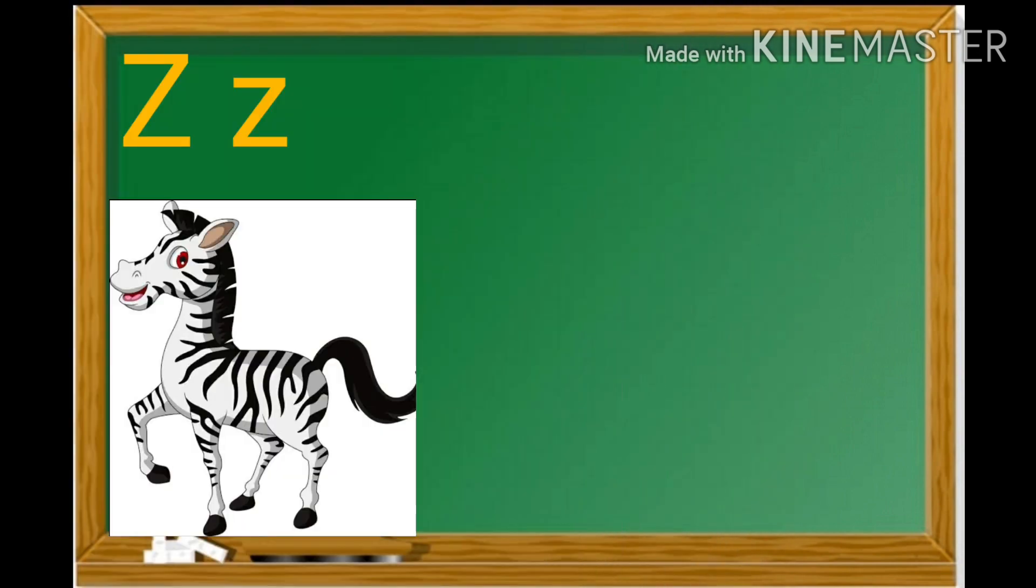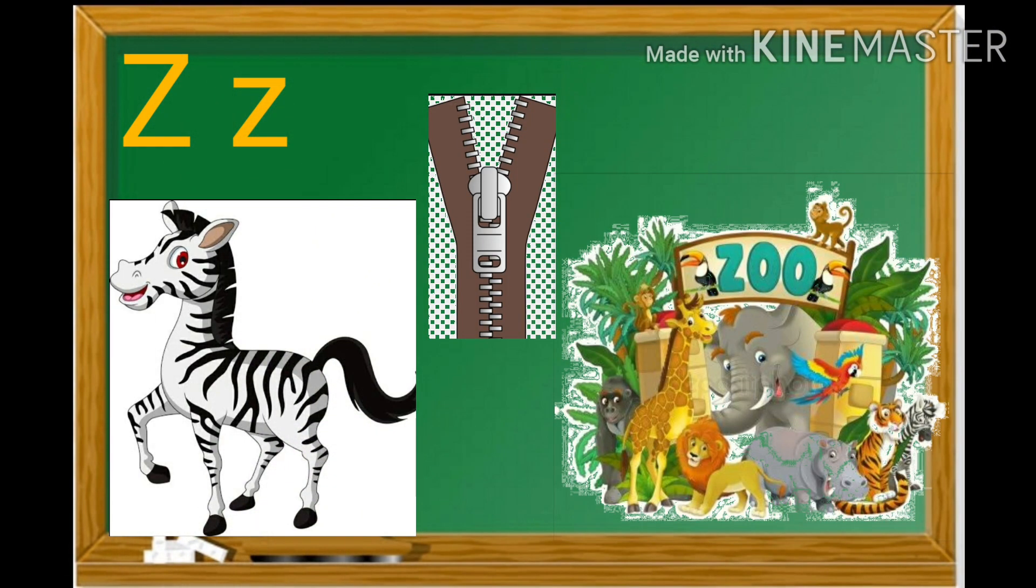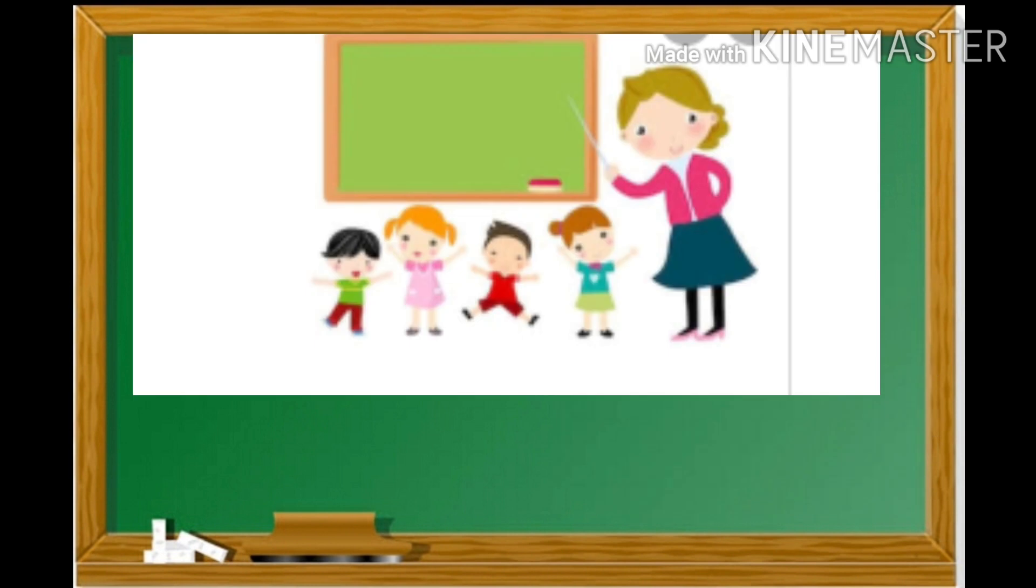Mama Z and Baby Z. And sound of Z is Z. Say with me. Z. Zebra. Z. Zip. Z. Zoo. I hope you all are now clear with alphabets and their sounds.